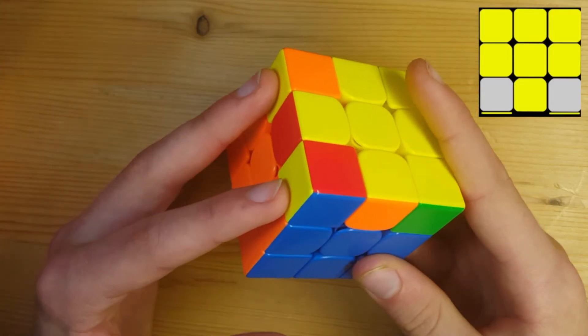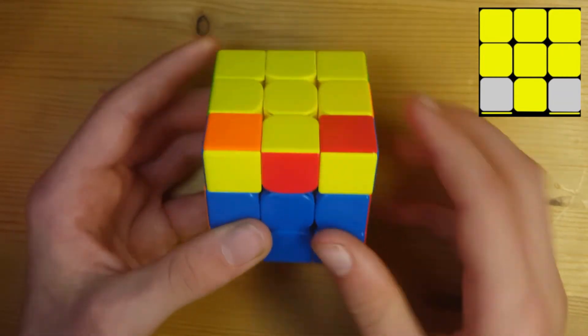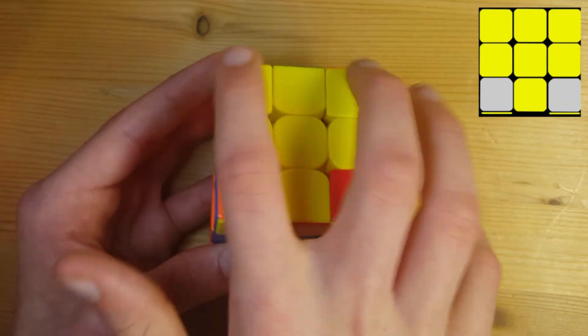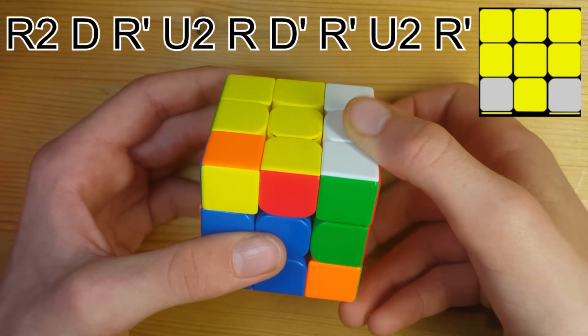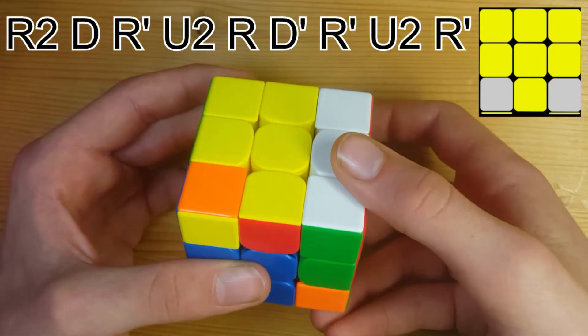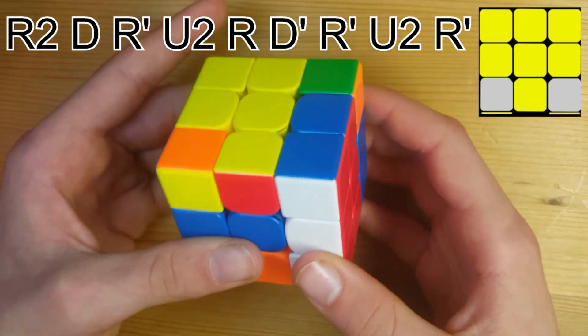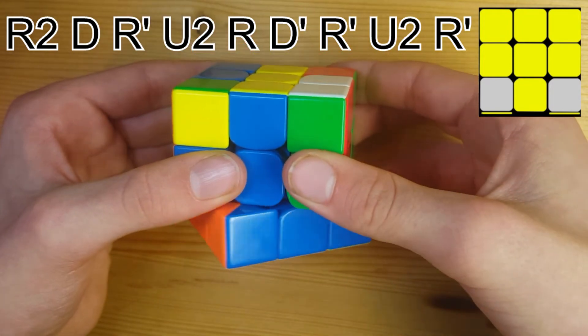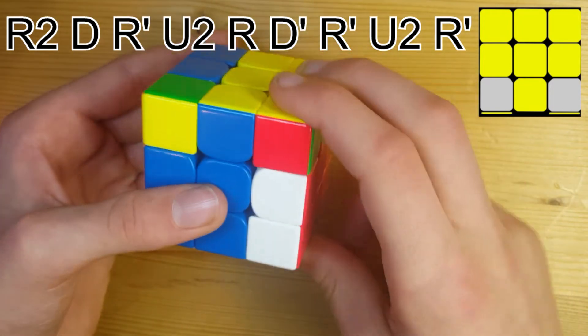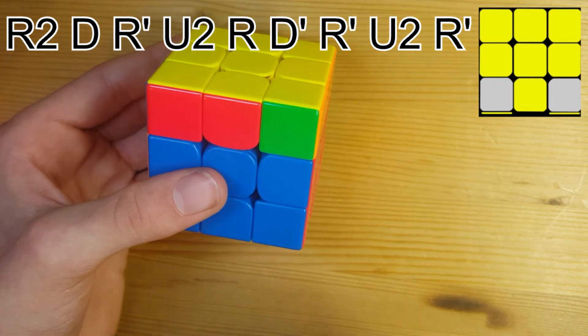The other case has them pointed in the same direction and the way you solve this is you're going to put them so they're facing towards you and these ones at the back and you're going to bring this side up, or not two layers but just this side. Move it up twice. Then do a D move like that. You're going to bring the side down once and do a U2. Then bring it back up and do a D prime move. Bring it down a little bit. A U2. And then bring it down again.